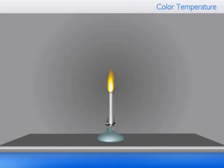So, to summarize, the lower the color temperature is, the warmer, more reddish, the color of the light will be. On the other hand, the higher the color temperature is, the cooler, more bluish, the color of the light will be.